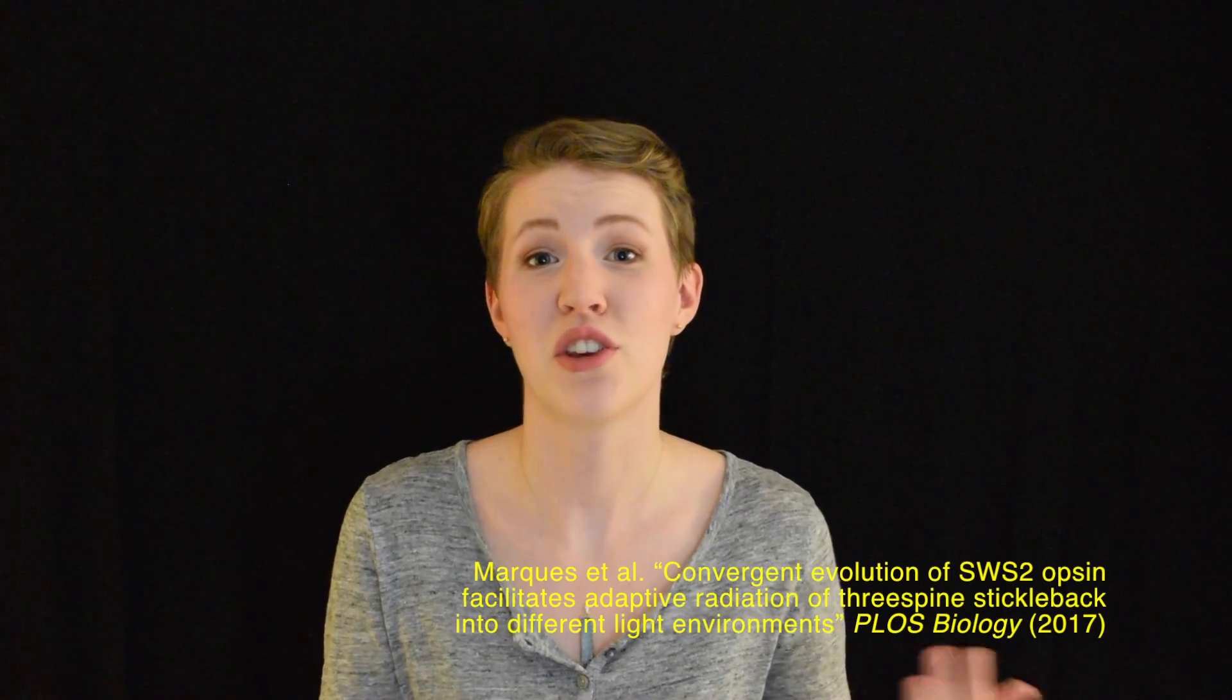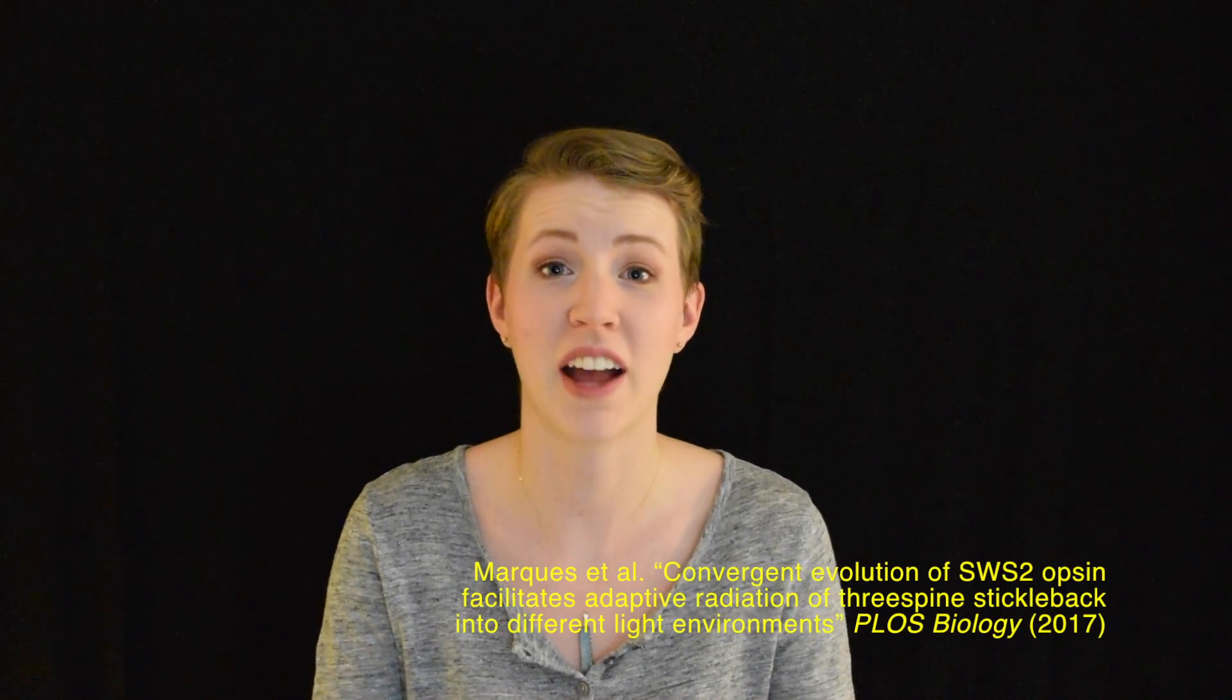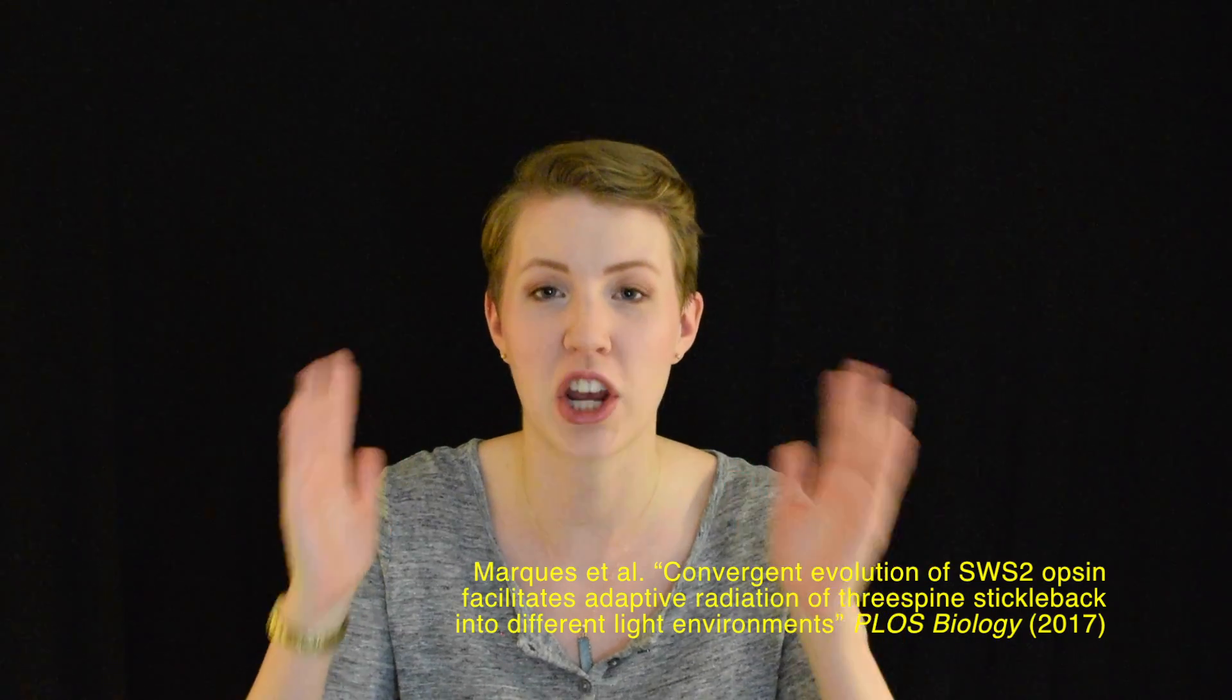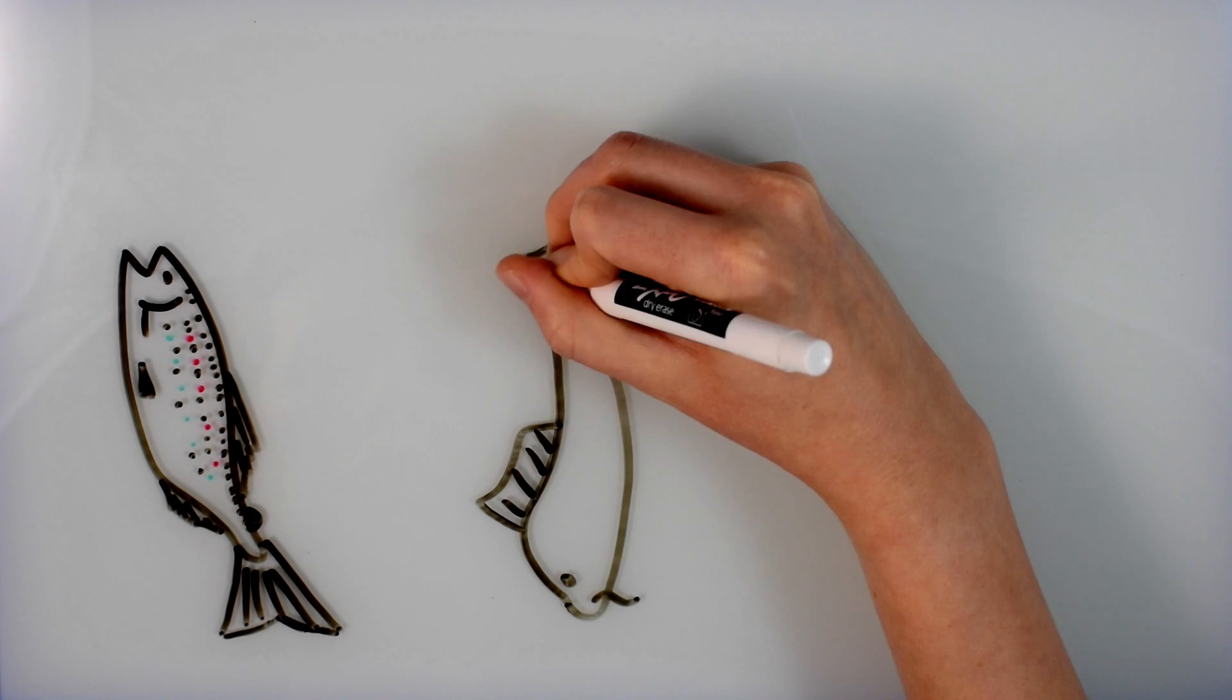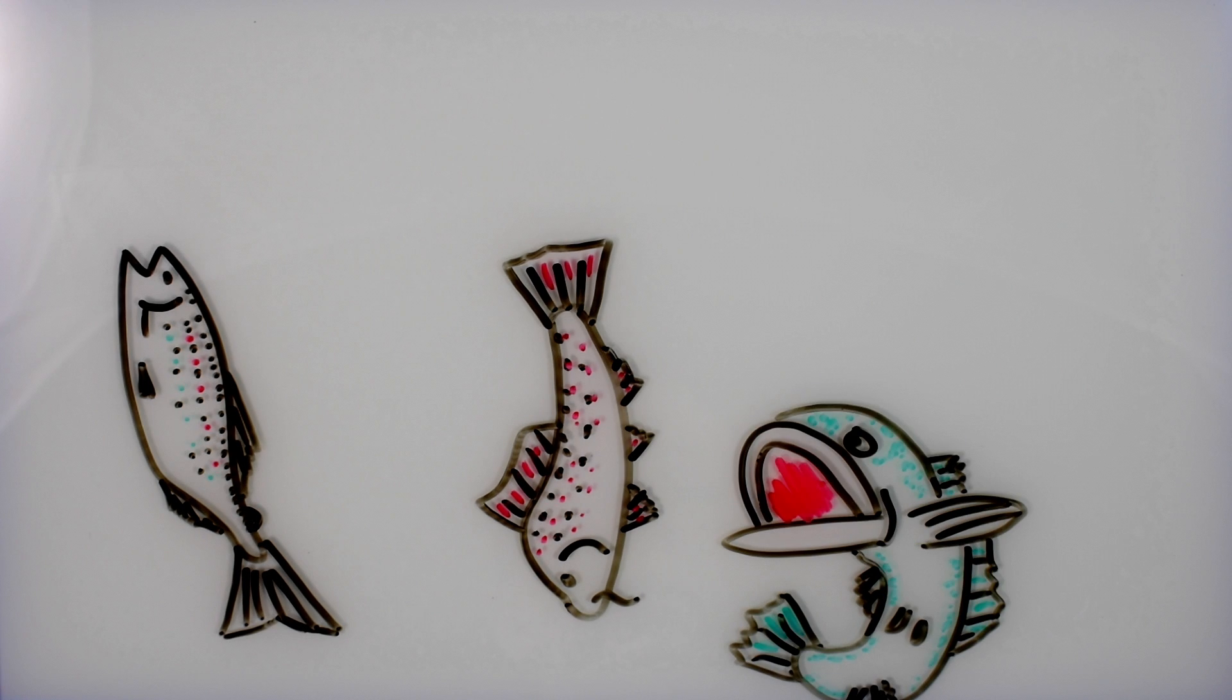Scientists at the University of Victoria in Canada have been able to find the exact genetic changes that lead to differences in vision in a super cool little fish called the three-spine stickleback. And it turns out that those genetic changes are the exact same ones that happened in the ancestor of spiny-rayed fish like salmon, carp, and bass over 198 million years ago.